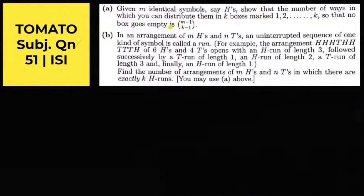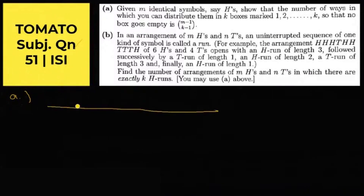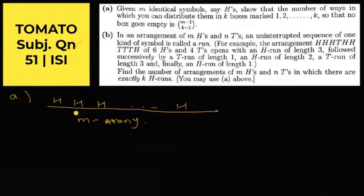In the first part, it is given m identical symbols — say H — and we need to show the number of ways in which we can distribute them in k boxes so that no box goes empty is m minus 1 choose k minus 1. Consider how many symbols are here.